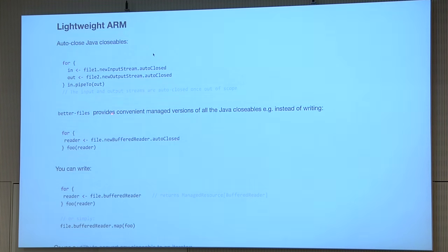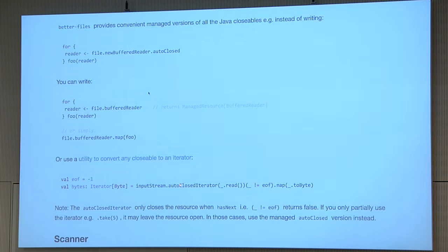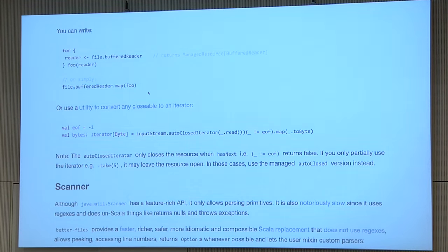Here's an example: you have a BufferedReader, do something with it in a for comprehension or map — it's the same thing — and it closes the BufferedReader when done. Most of the time when reading a file and you get back an iterator of strings, bytes, or characters, it's a self-closing iterator — when hasNext is false, it closes the stream. But if you don't finish iterating, the stream will be left open. In that case I recommend using the auto-closed traversable version instead of the iterator.